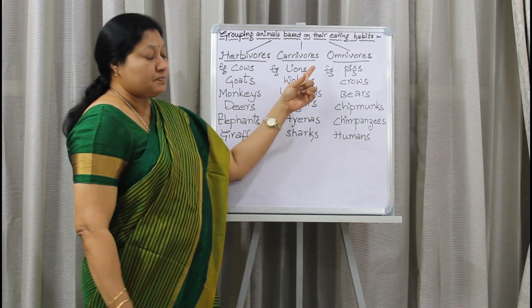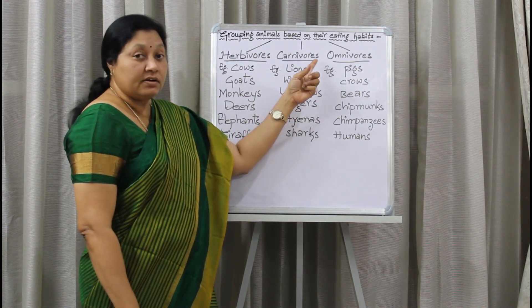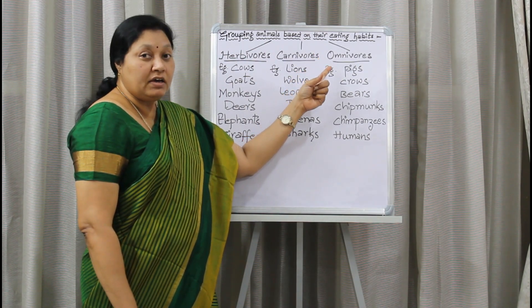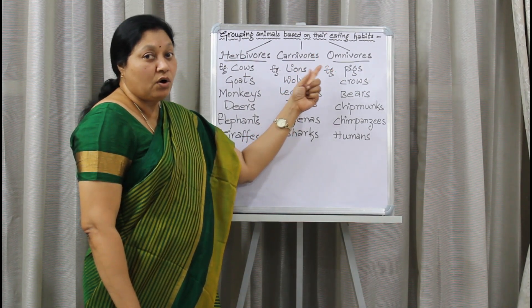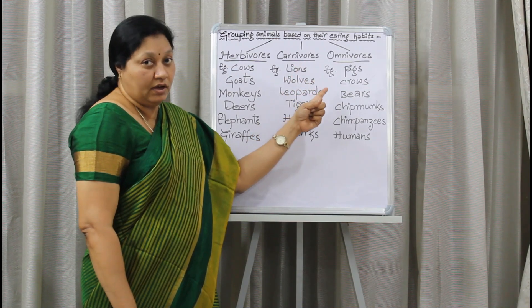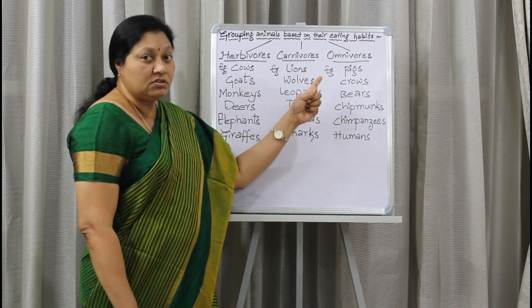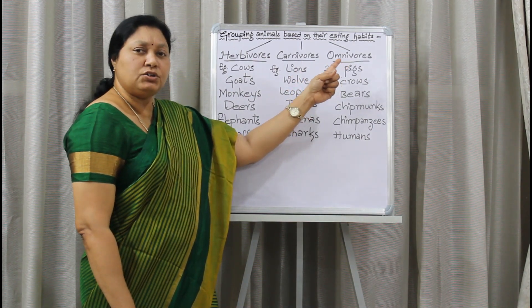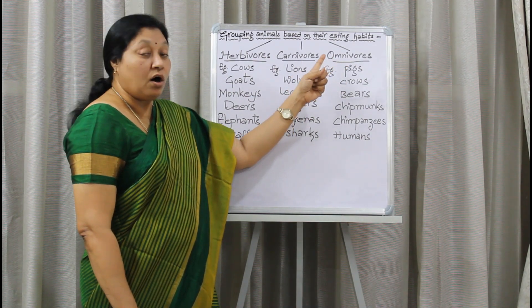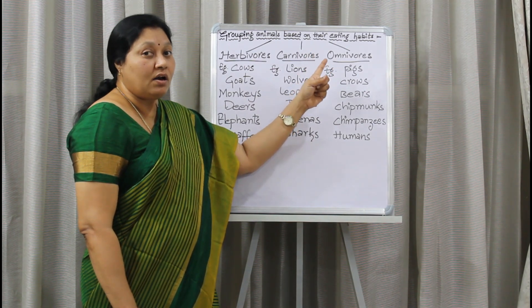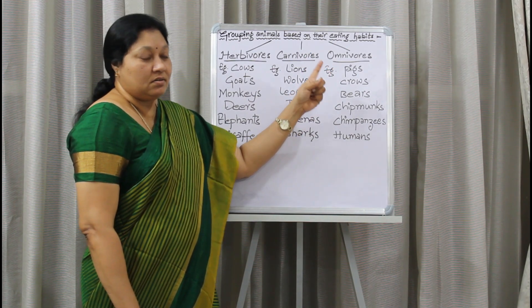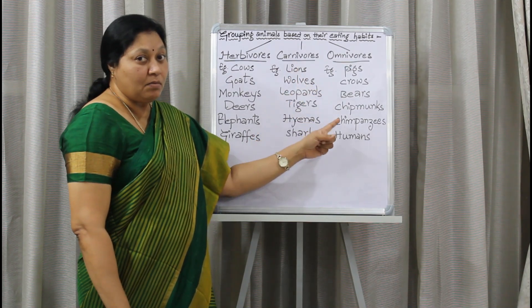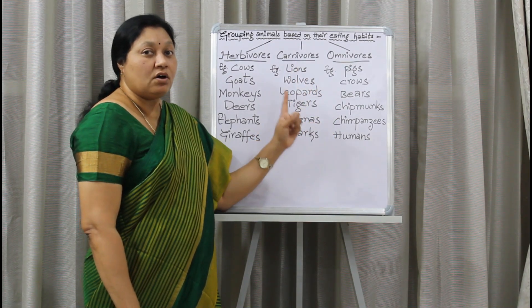Looking at the meaning of omnivores — this word is also from Latin, where 'omni' means all or everything, and 'voris' means to eat. So omnivores are all-eaters. Animals that eat both plant food and animal food are called omnivores.